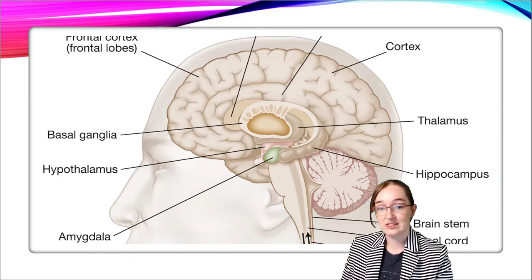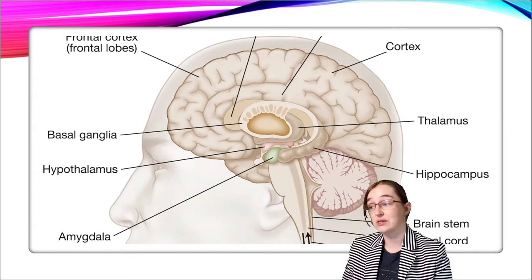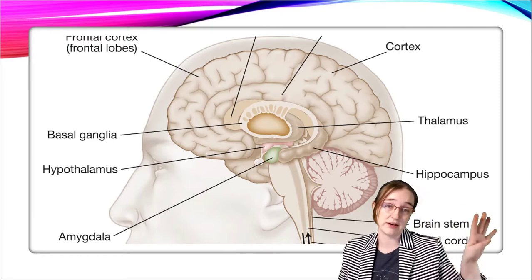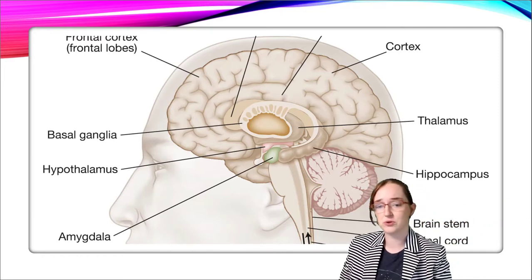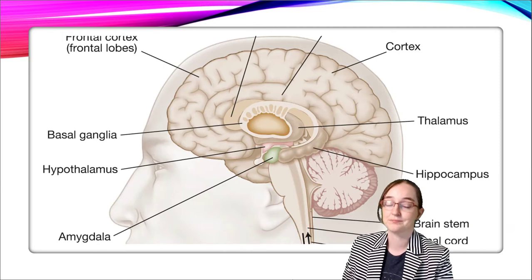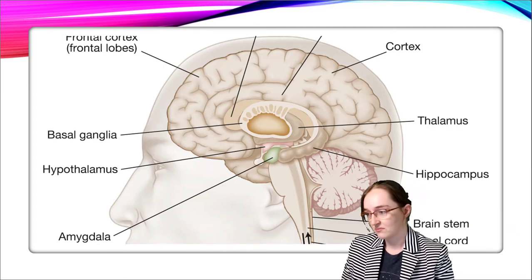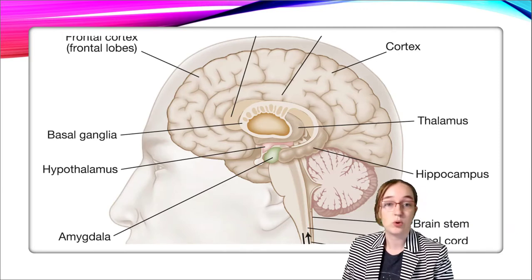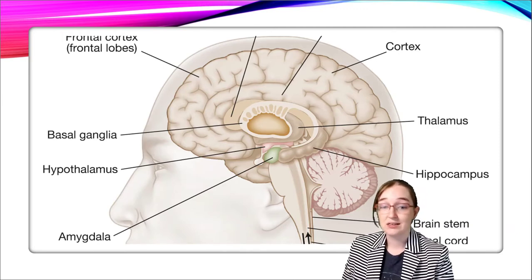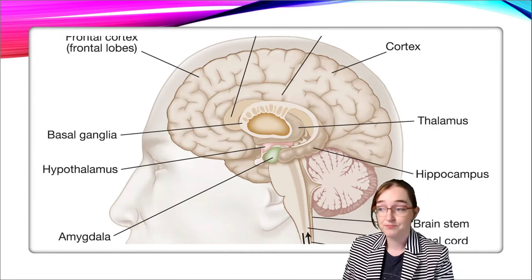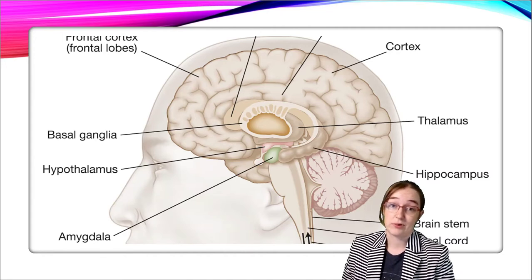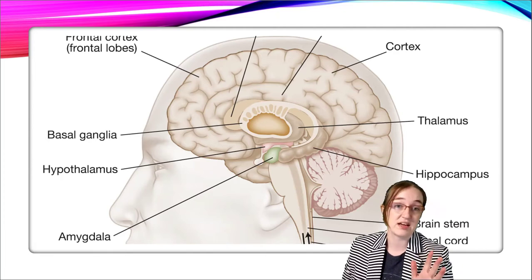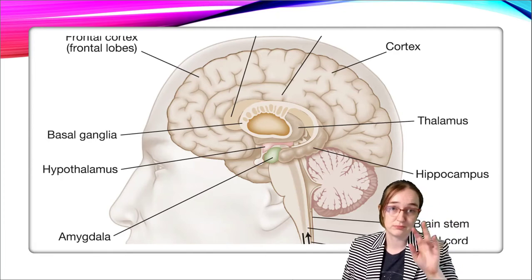The hypothalamus is connected to just about everything else and secretes several hormones that we'll talk about in a different unit. The amygdala is important for its role in emotion, and we are going to talk about that one a lot in about five slides.